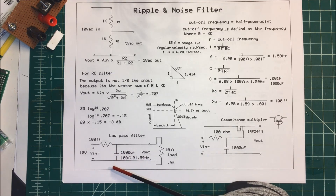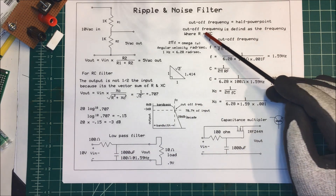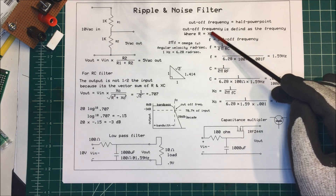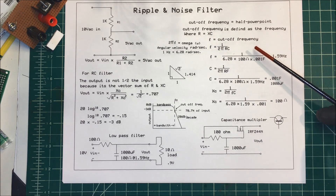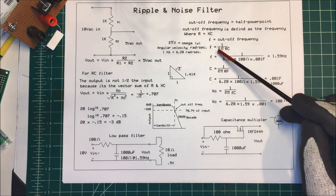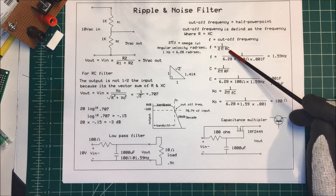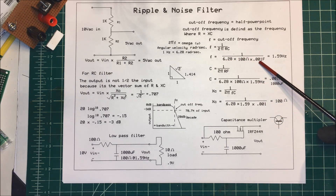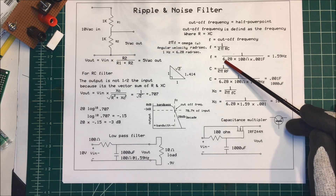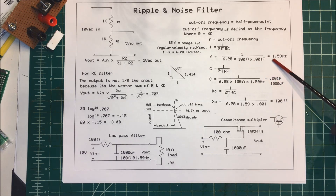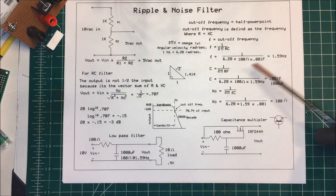We need to find the cutoff frequency, or the half-power point. The cutoff frequency is defined as the frequency where the resistance and the capacitor reactance are equal to each other. To find the cutoff frequency, you take 1 over 2π times the resistance times the capacitance. I picked 100 ohms and 1000 microfarads.